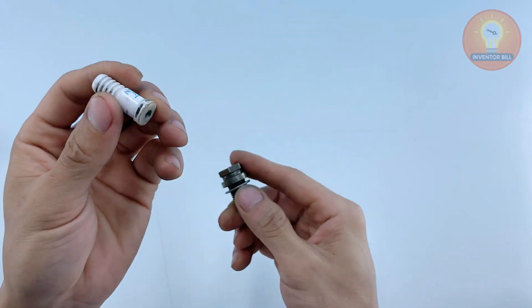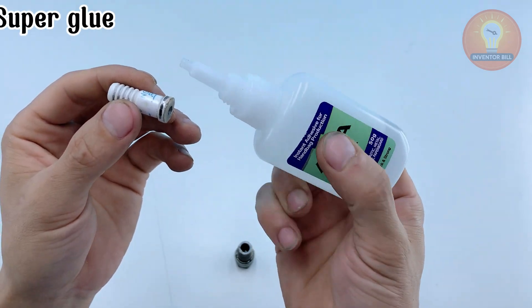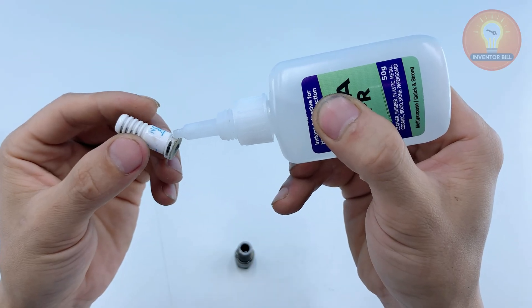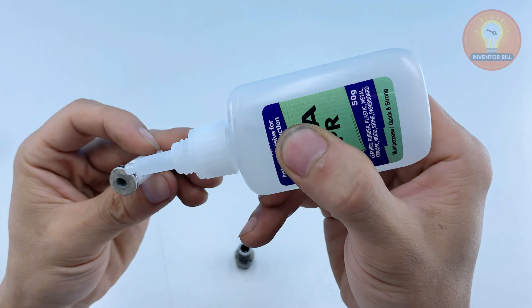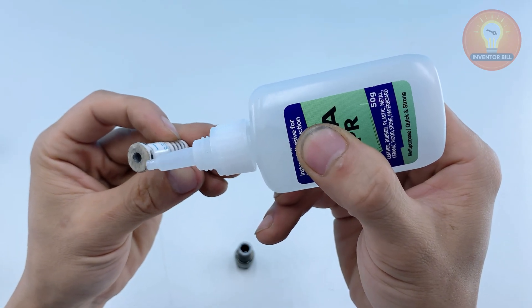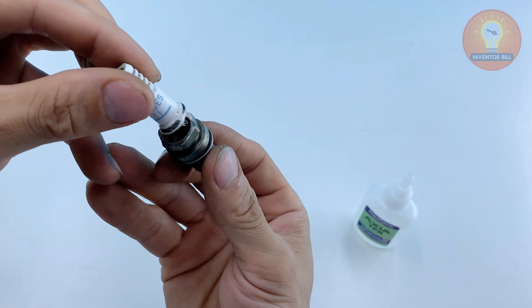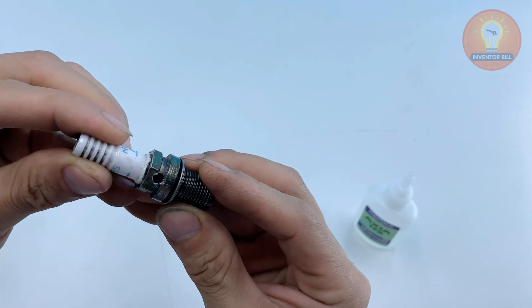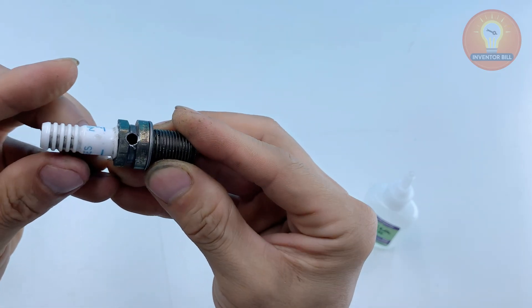Now, it's time to reassemble the parts. Apply a few drops of super glue around the outside of the ceramic piece and press it back into the metal shell. Make sure it's centered and that the hole stays open all the way through. Hold it steady for a minute or two until the glue sets.